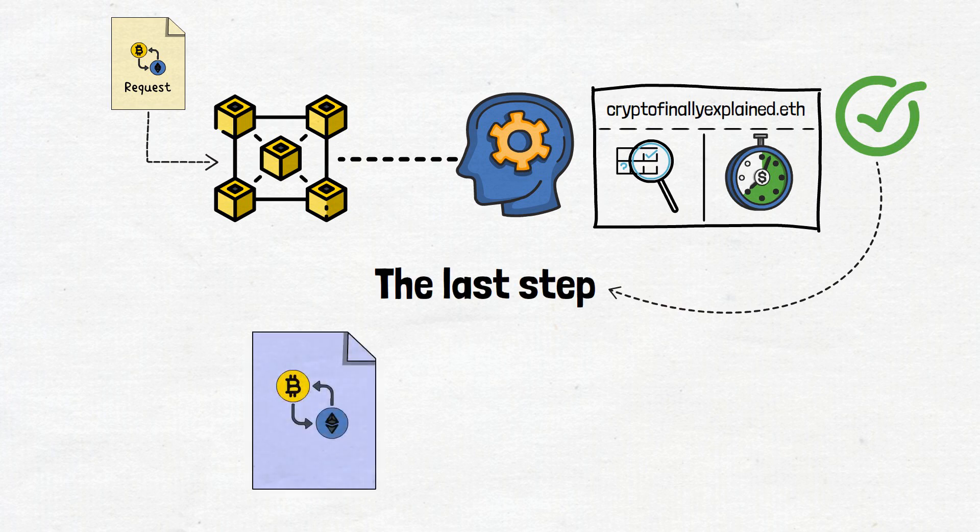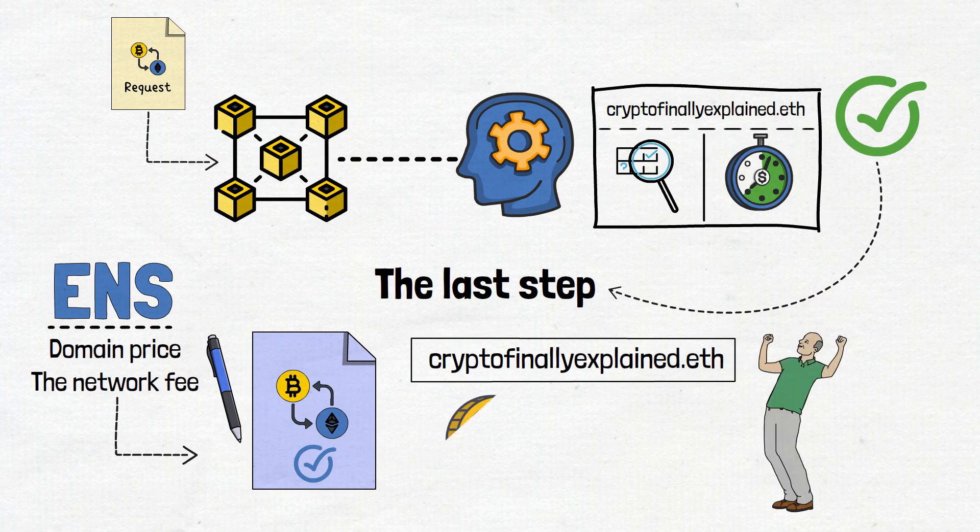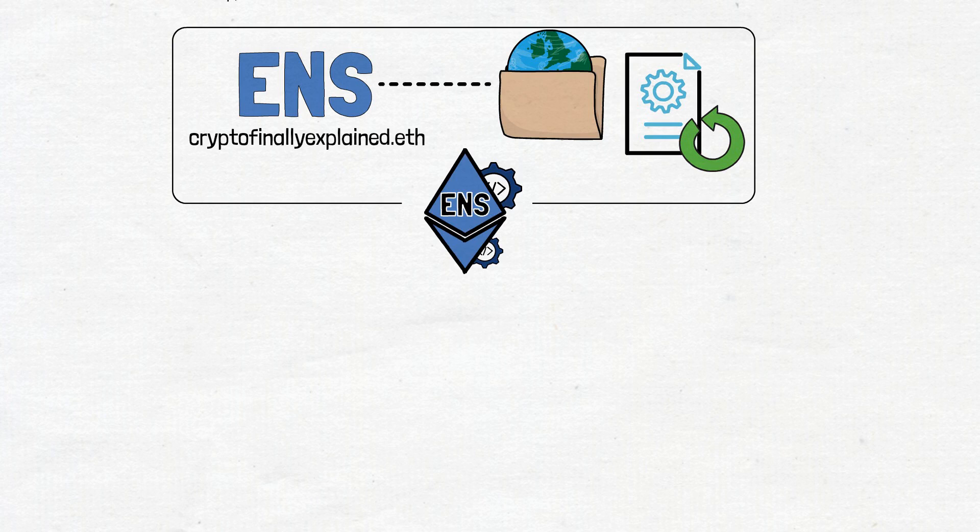Once again, you will have to sign another transaction, which, at this point, will cover the ENS domain price and the network fee. After this transaction is completed, the domain name will be officially yours, and it will appear as a digital collectible in your wallet. To make the ENS domain an actual address, you will have to set the reverse record. This process is done directly on the ENS application.